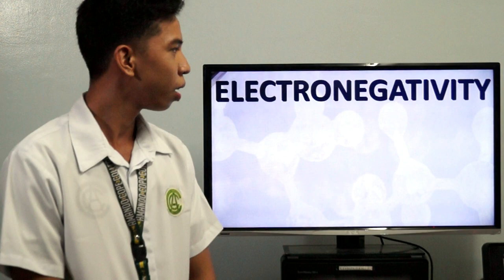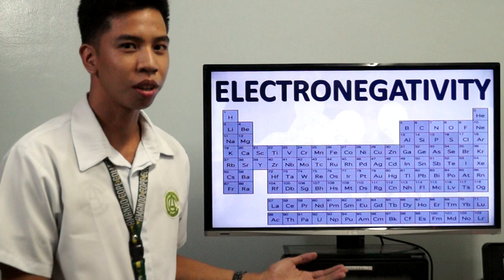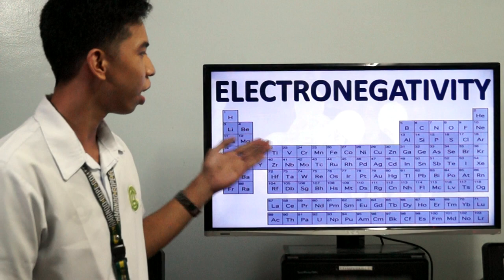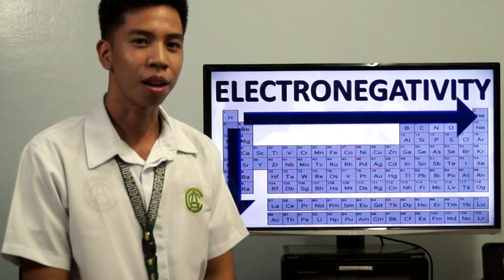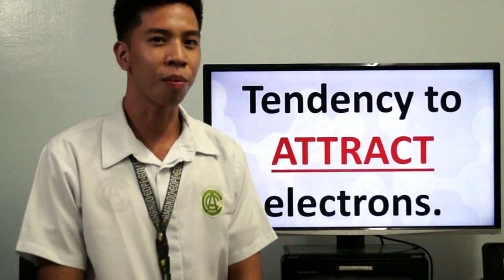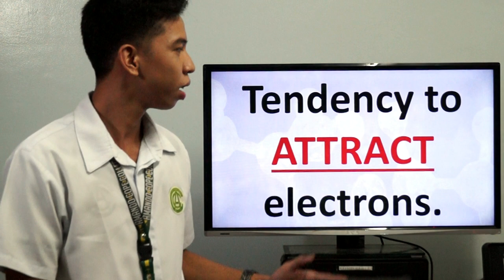So what exactly is electronegativity? I will show you this periodic table. In the given elements earlier, the atomic number of hydrogen is on the left side, and on the right side, the atomic number of 17 is chlorine. You will see that the electronegativity increases from left to right and from top to bottom. In general, elements with a greater number of electronegativity have the tendency to attract electrons.